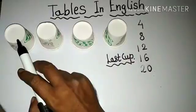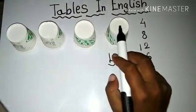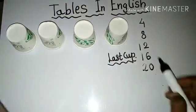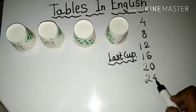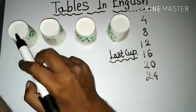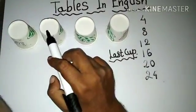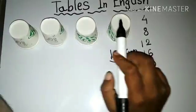Next group: 21, 22, 23, 24. Then: 25, 26, 27, 28.